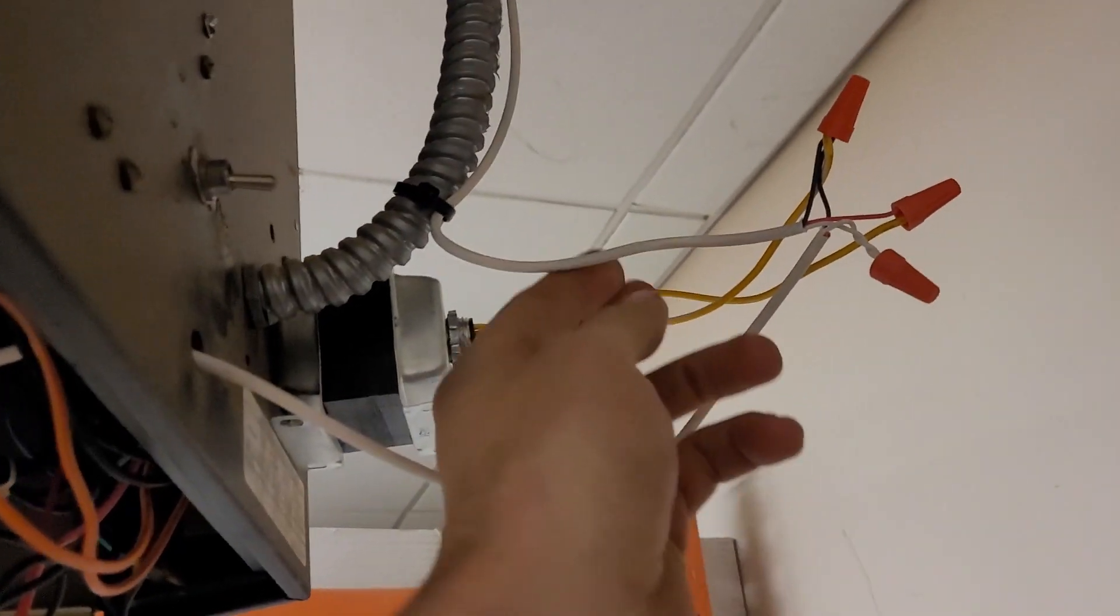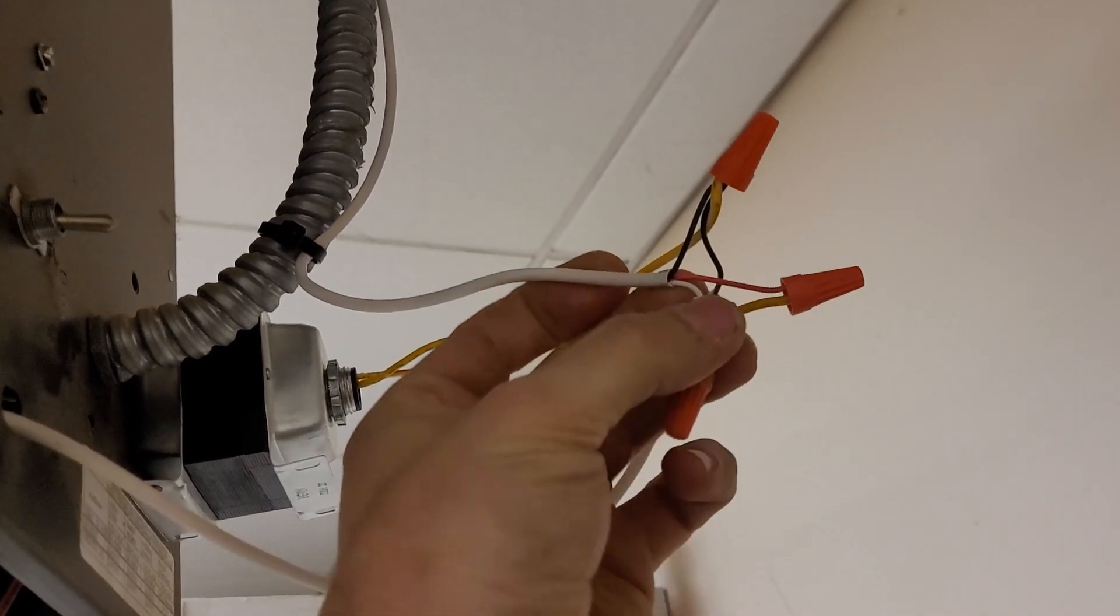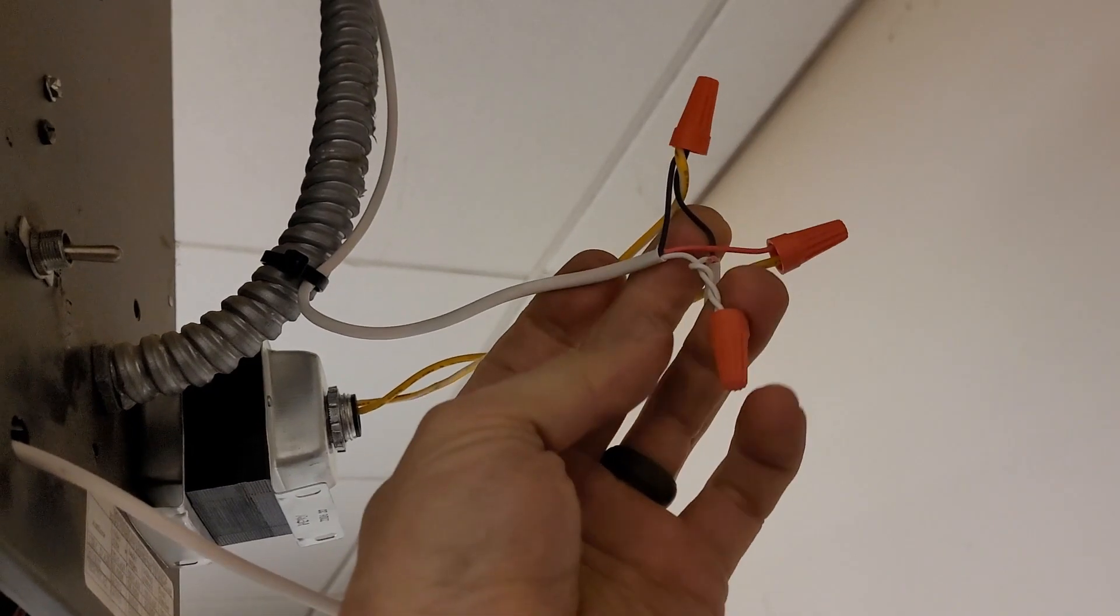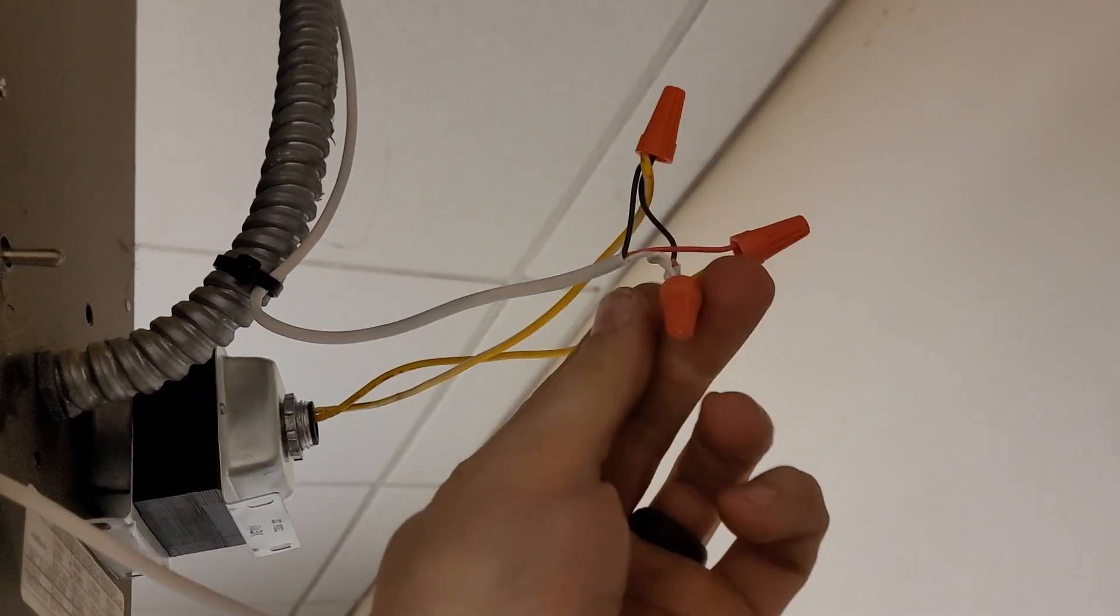The 24 volts is gonna get sent over to the thermostat. There's three wires going to the thermostat - red and black for power and common coming off of that transformer, and then white coming back from W1 or the heat call.